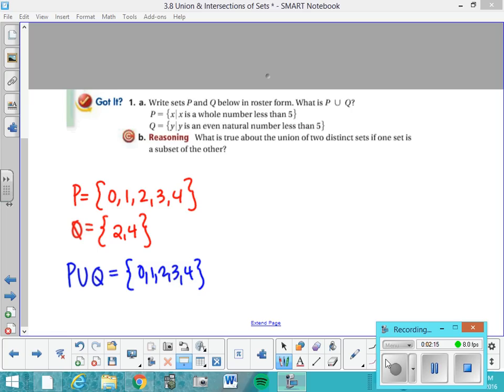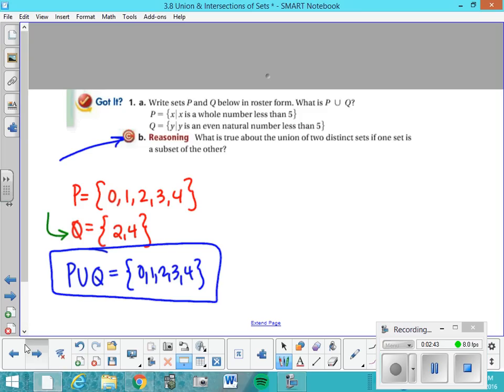So you can see my answer here. P union Q is the set of 0, 1, 2, 3, and 4. So it's really not any different than the set of P itself. So that leads us to this question right here: What is true about the union of two distinct sets if one is the subset of the other? Recall that Q is a subset of P. So if Q is a subset of P, then the union is just going to be the universal set. Let's go on and try another one.